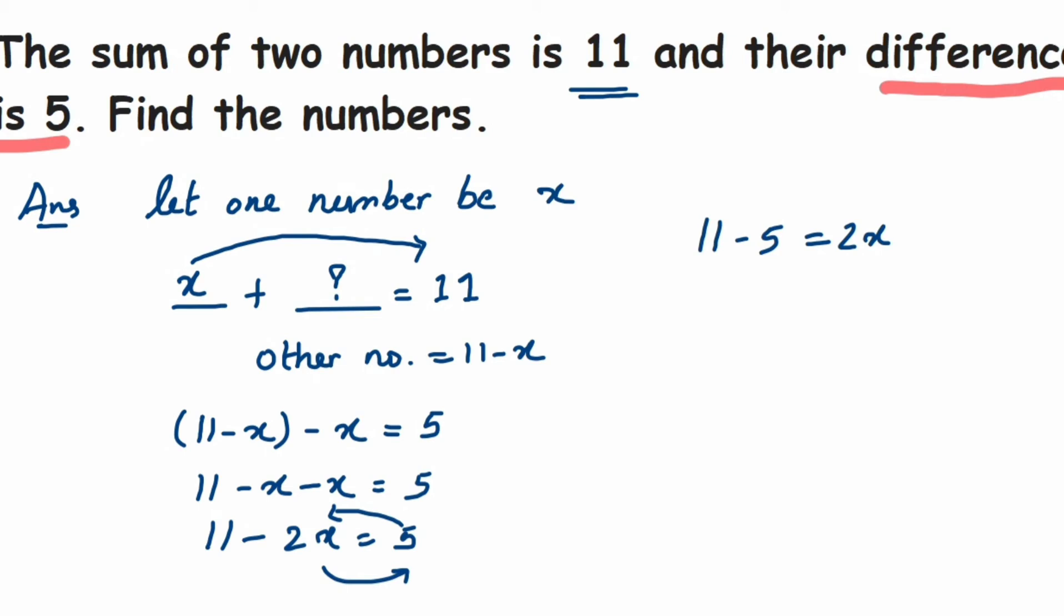So 11 minus 5 is 6, so 6 is equal to 2x. So we're going to isolate the variable, it means we're going to transpose 2 to the other side. So from here 6 upon 2 is equal to x. So 6 and 2 we can cancel, 2 ones and 2 threes.